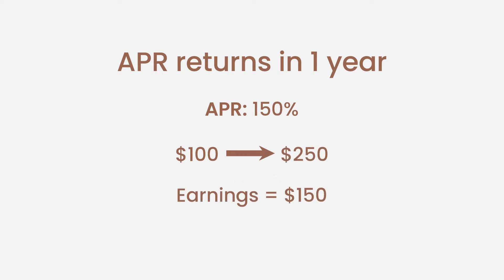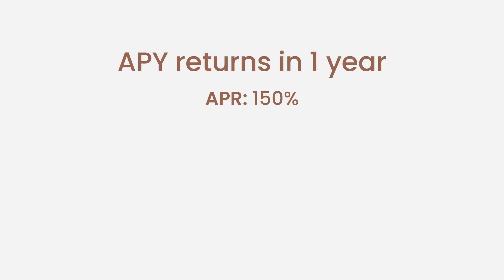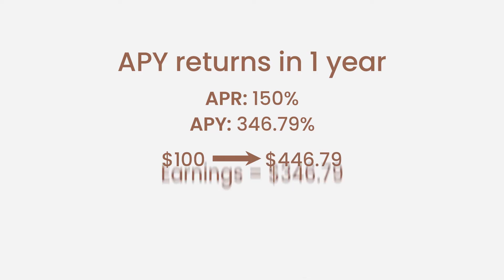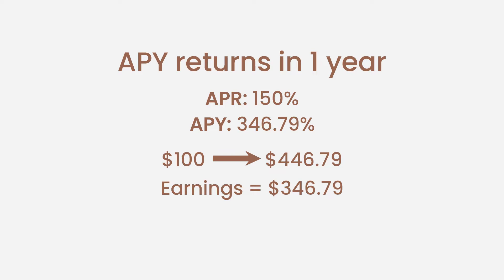However, if you deposit the same amount but compounding once daily, you will be having an APY of 346.79%, earning $346.79 in the same period — more than twice as much as if you hadn't compounded your earnings.